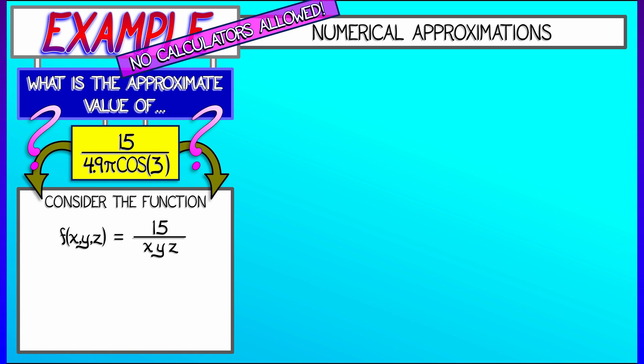Consider the following function of three variables. f of x, y, and z is 15 divided by x times y times z. You can see the relationship to what we're trying to compute. And with a little bit of implicit differentiation, I want you to work out and check that df is negative 15 over xyz times quantity dx over x plus dy over y plus dz over z. Go check that.